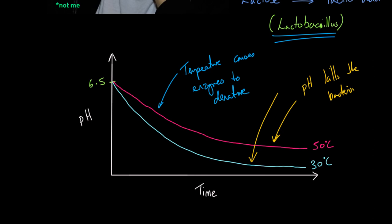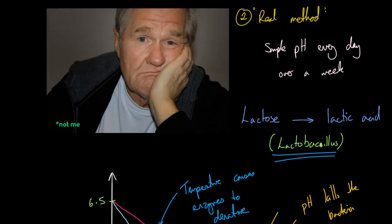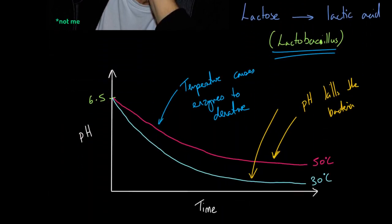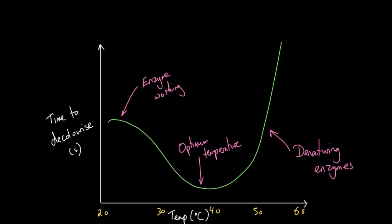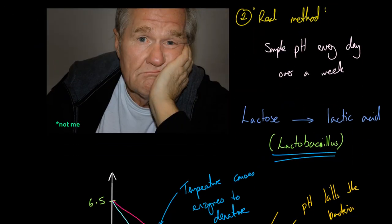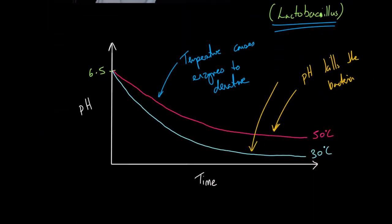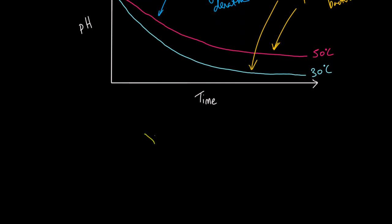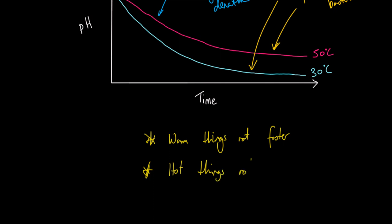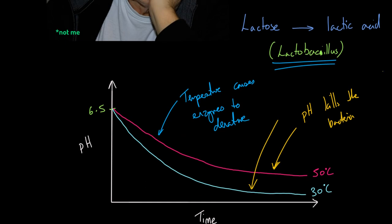You might think: we reached the same conclusion very quickly with the fake experiment — high temperatures make things rot slowly because enzymes denature. And yes, it did, but the real method is still better because you've actually decayed something. The message to finish: warm things rot faster, hot things rot slowly — why? Enzymes denaturing.